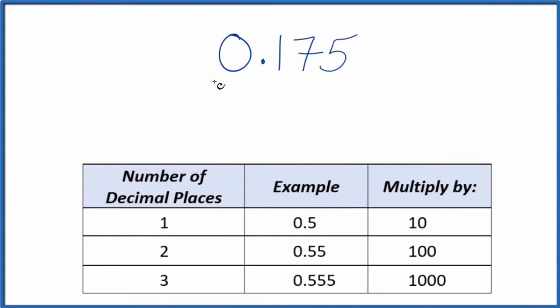Let's convert the decimal 0.175 to a fraction. We can call this 0.175 over 1. It doesn't change the value since we're dividing by 1, but now we have the start of a fraction.